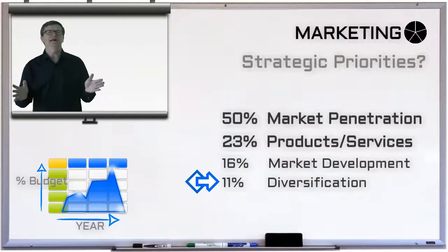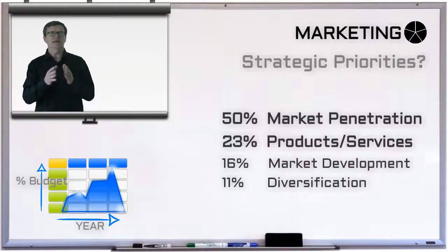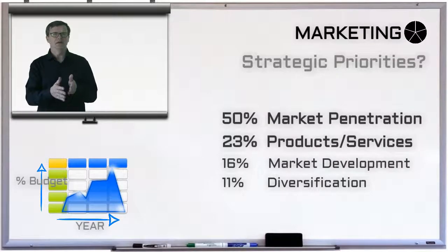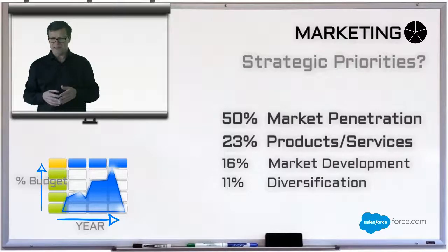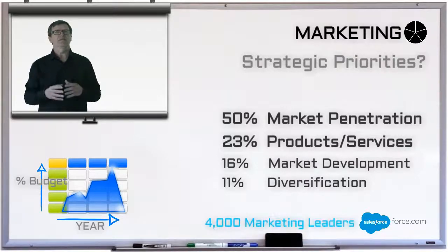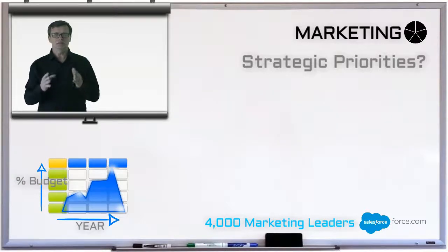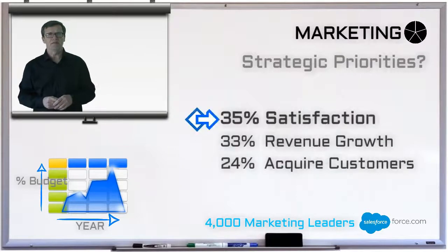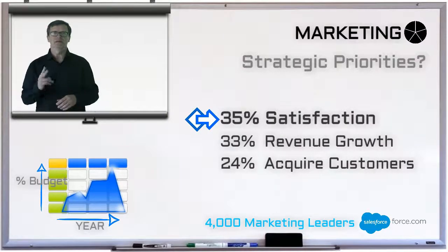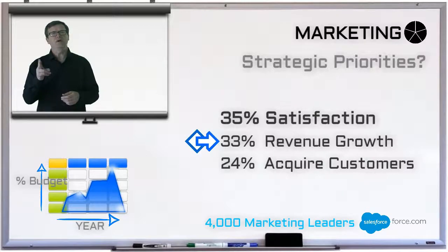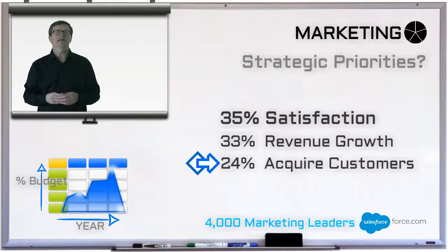Based on this data, we can see that marketers are currently focused most on penetrating existing markets rather than growing markets. These findings are supported by a 2016 Salesforce.com study of some 4,000 full-time marketing leaders in North America, Europe, Asia, etc. Those 4,000 marketing leaders said that their top three strategic priorities were: one, 35% said customer satisfaction; two, 33% said revenue growth; and three, 24% said their priority was customer acquisition.